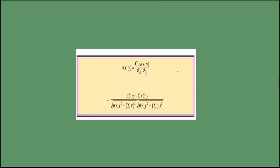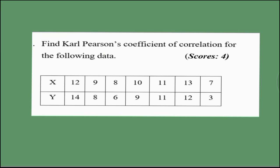That is, Carl Pearson's correlation coefficient: R(xy) equals Covariance(xy) divided by Sigma x into Sigma y, which equals n·Sigma(xy) minus Sigma(x)·Sigma(y) divided by the respective standard deviations.